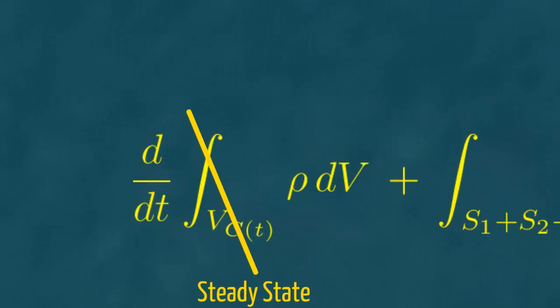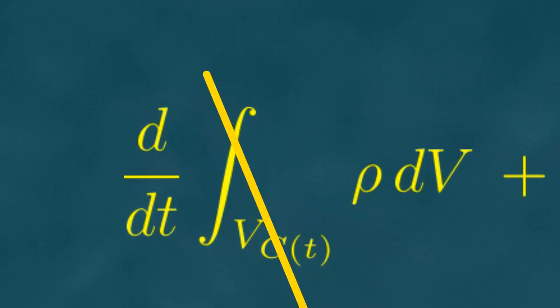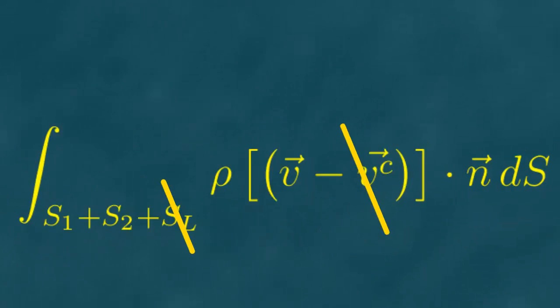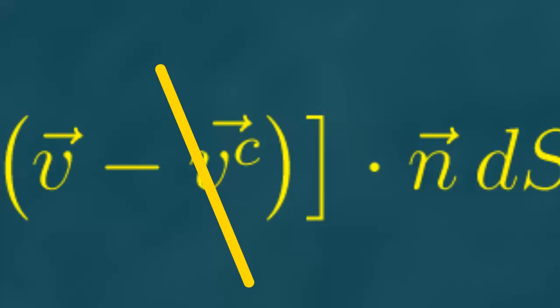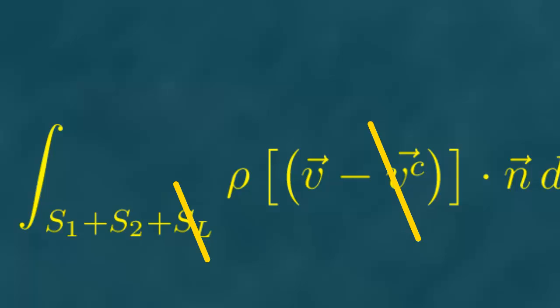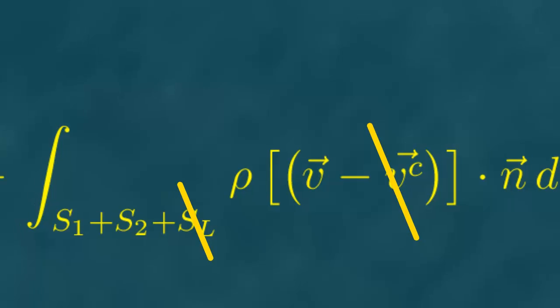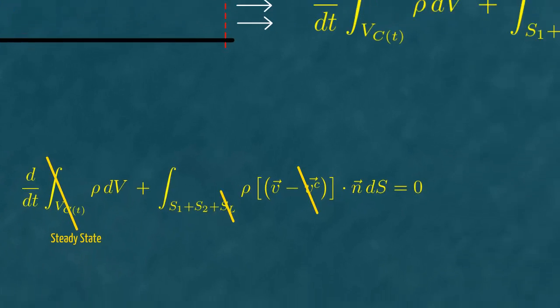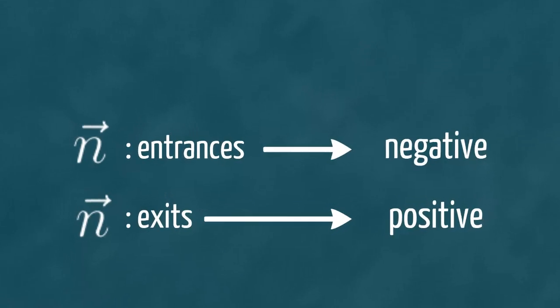We suppose a steady state, so the first term is zero. The control volume remains static. The liquid cannot flow through the lateral surface because the wall prevents it. Finally, we obtain a simple balance of mass.